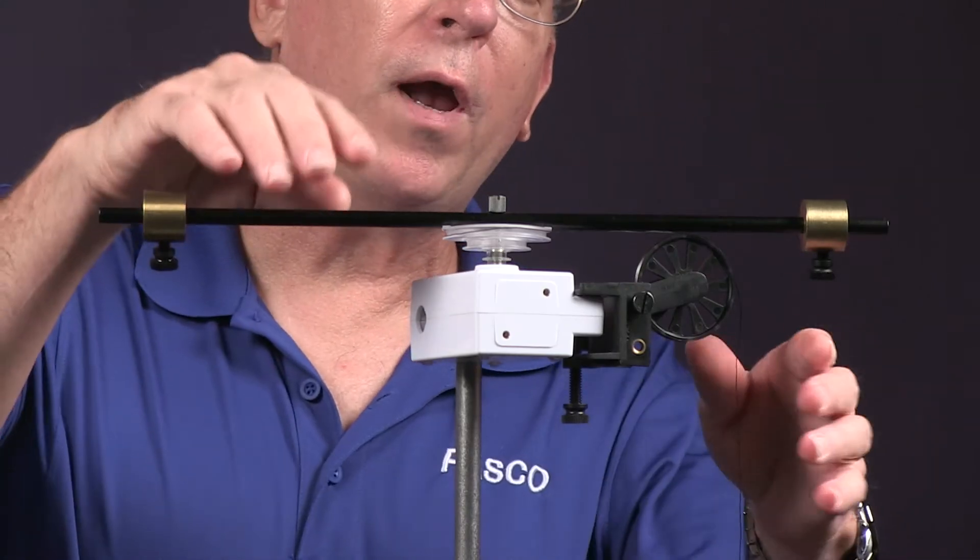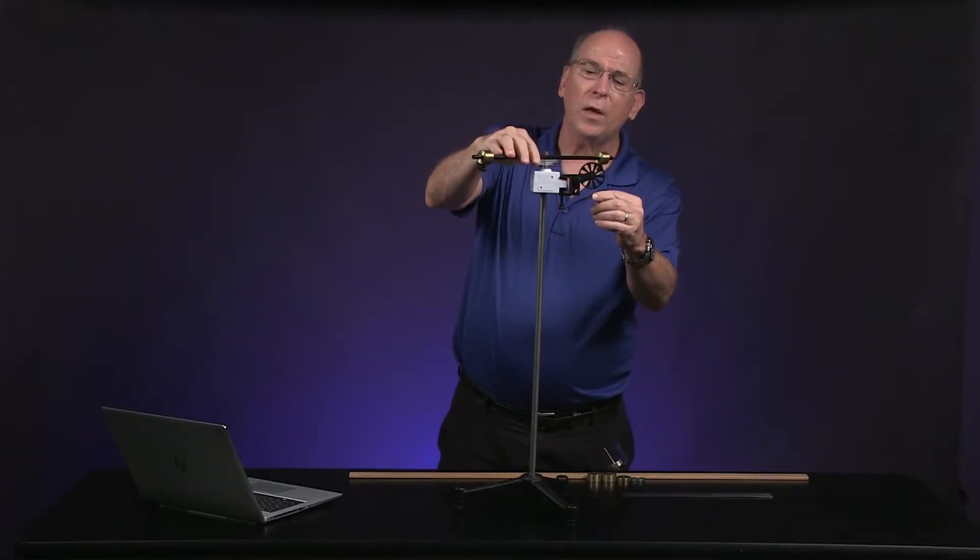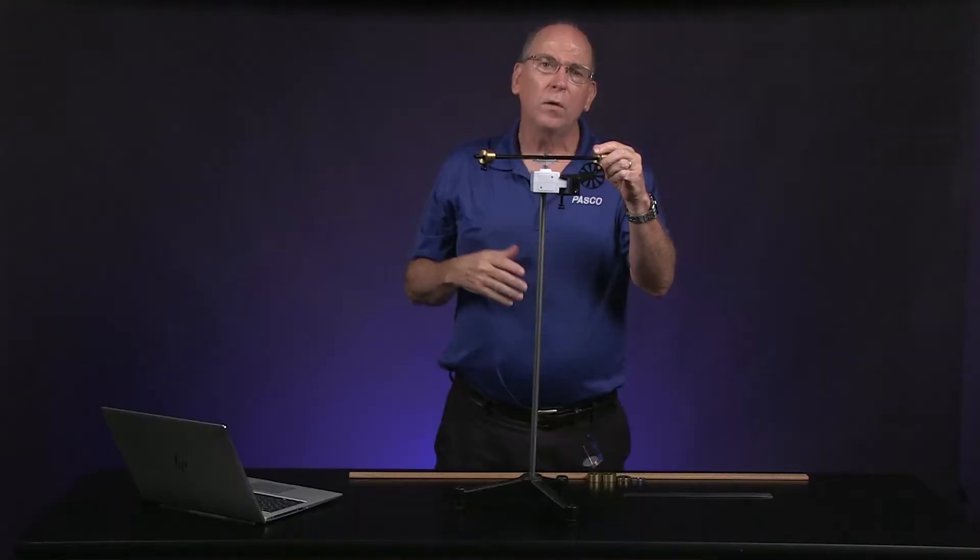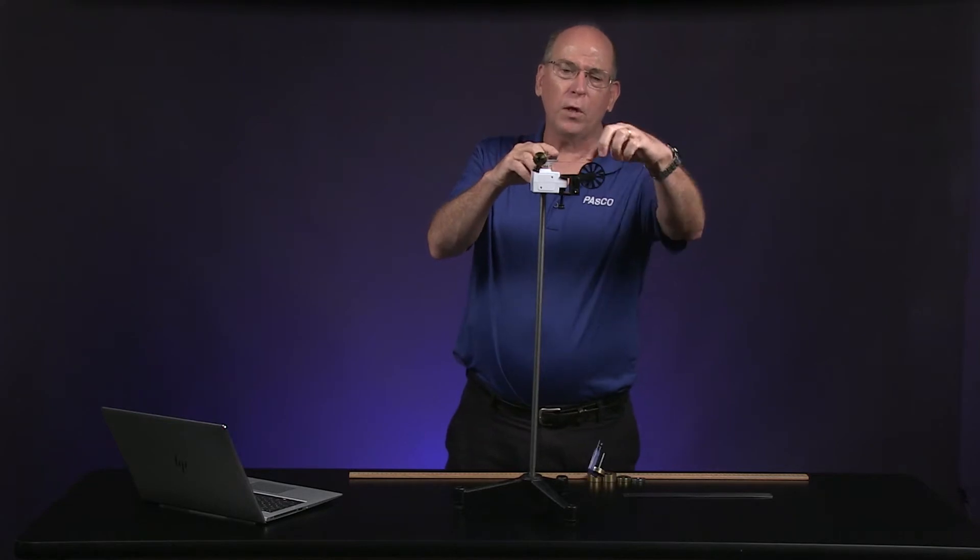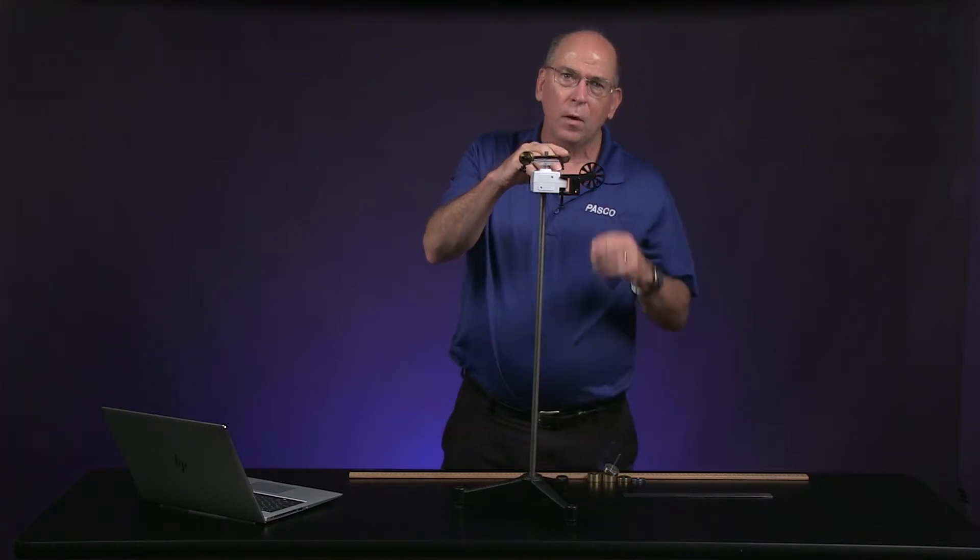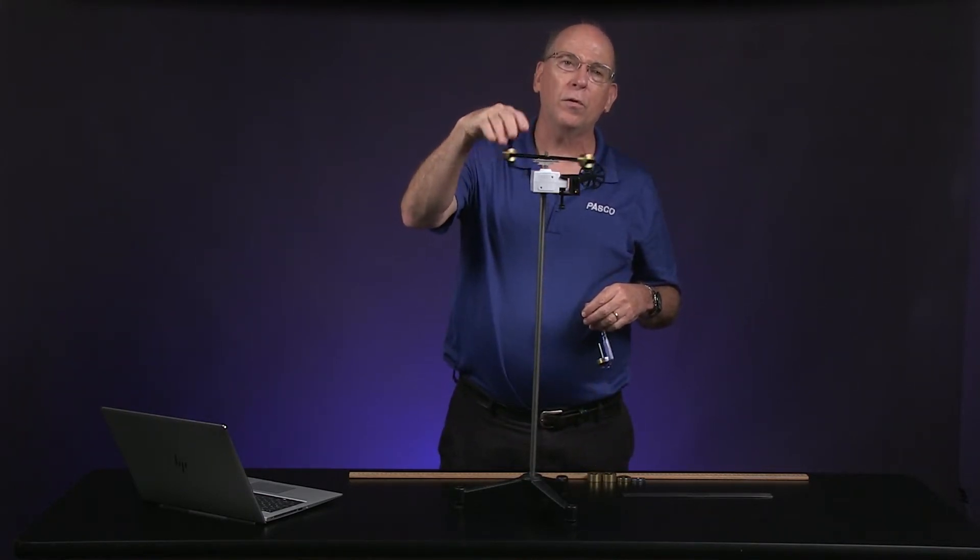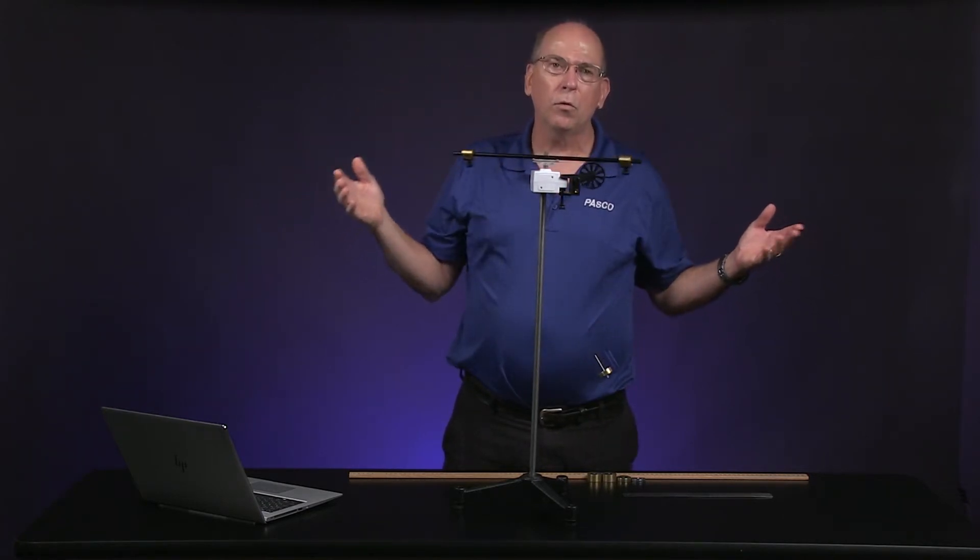We wound a string around this pulley that is connected to the axle of the rotary motion sensor. This allows us to apply a torque to the axle. The string goes over a second pulley that is attached to a falling mass. The tension of the string applies a constant torque to the axle and the arm, causing them to rotate.